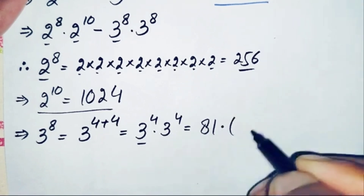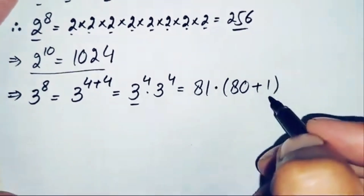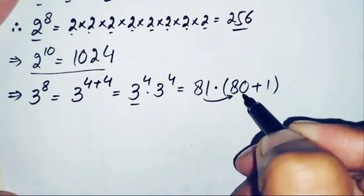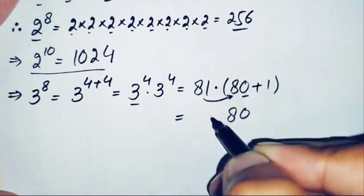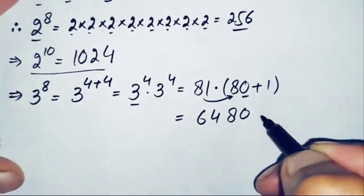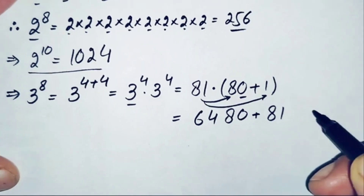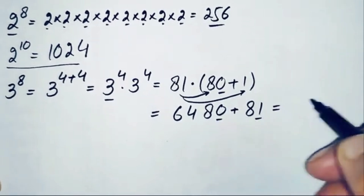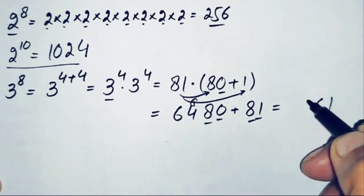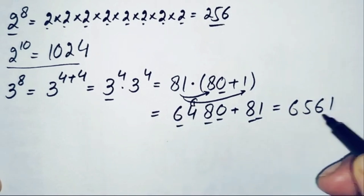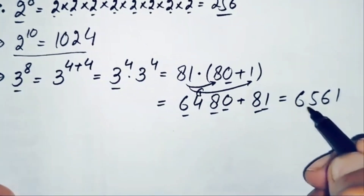So 3 raised to power 8 is 81 times 81. We write 81 as 80 plus 1, multiply 81 by each part: 81 times 80 plus 81 times 1 equals 6480 plus 81. Adding these gives 6561. So the value of 3 raised to power 8 is 6561.